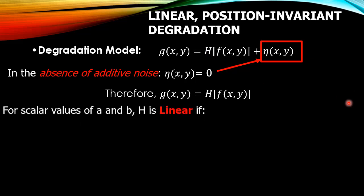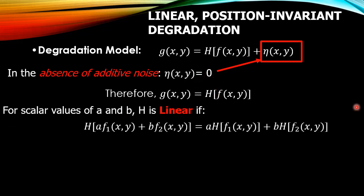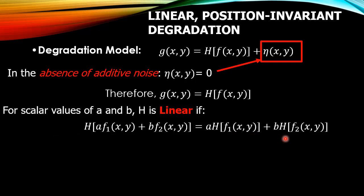For any scalar values a and b, the function h is linear if it satisfies: h[a·f₁(x,y) + b·f₂(x,y)] = a·h[f₁(x,y)] + b·h[f₂(x,y)]. That is, you can take the h function inside and separate the terms if h is linear.